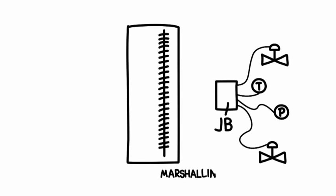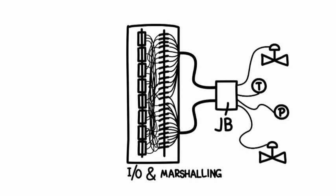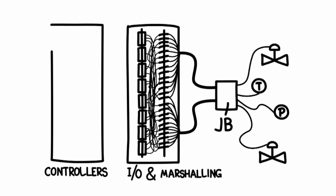Each device has to be marshaled and find its way to a specific I.O. card, which might only manage a handful of points. And there are lots of different types of cards: A.I., A.O., D.I., D.O., thermocouple, RTD. Yeah, okay, I get it.